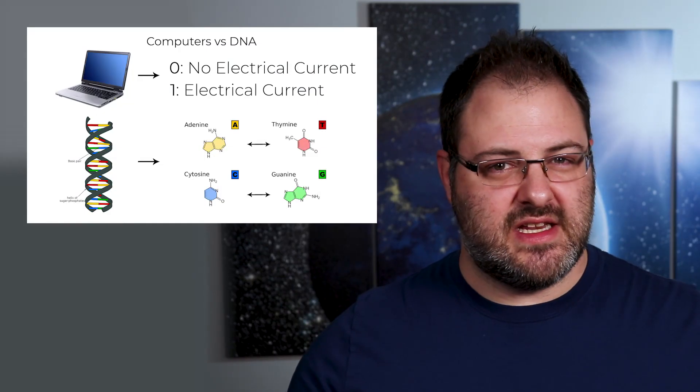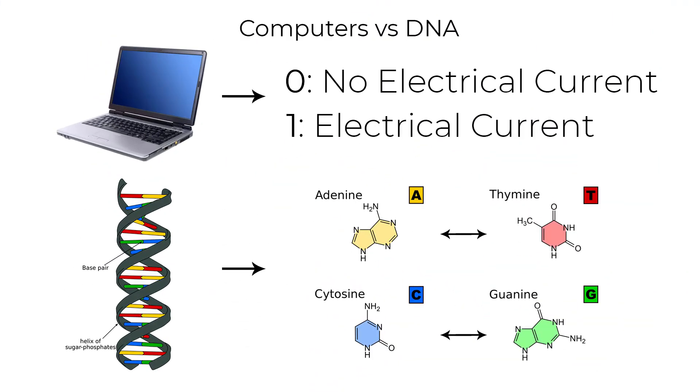Just like computer software is written in code that becomes instructions that the CPU can understand, biological organisms are written as DNA. DNA is essentially the code that makes up every living thing on Earth. Just like computers do everything with ones and zeros, DNA does everything with four letters: A, T, C, and G.